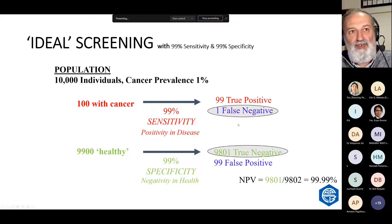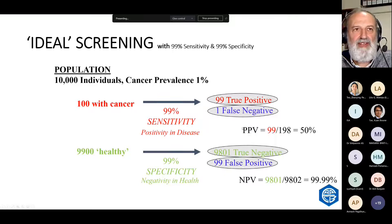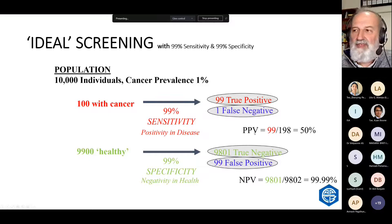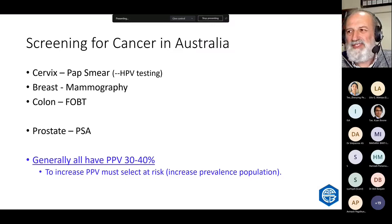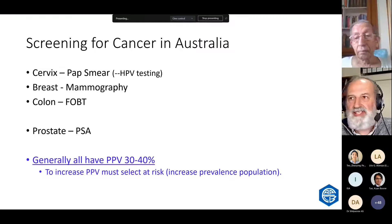The negative predictive value is excellent — when you get a negative, you're almost certain to be healthy. But the positive predictive value is only 50%, because we've got equal numbers of true positives and false positives, even in this almost ideal scenario. In screening programs in Australia for cervical, breast, colon, and prostate cancer, most have a positive predictive value of 30 to 40% — it's never more than 50%. We have to accept that's what happens with screening.